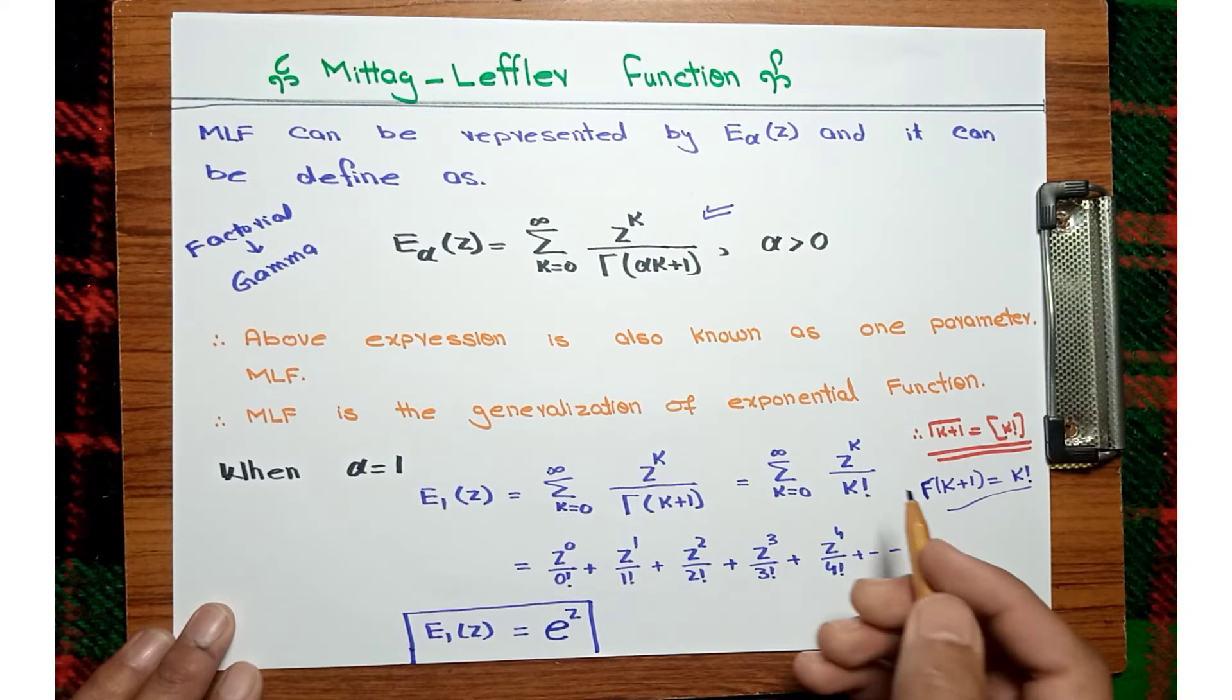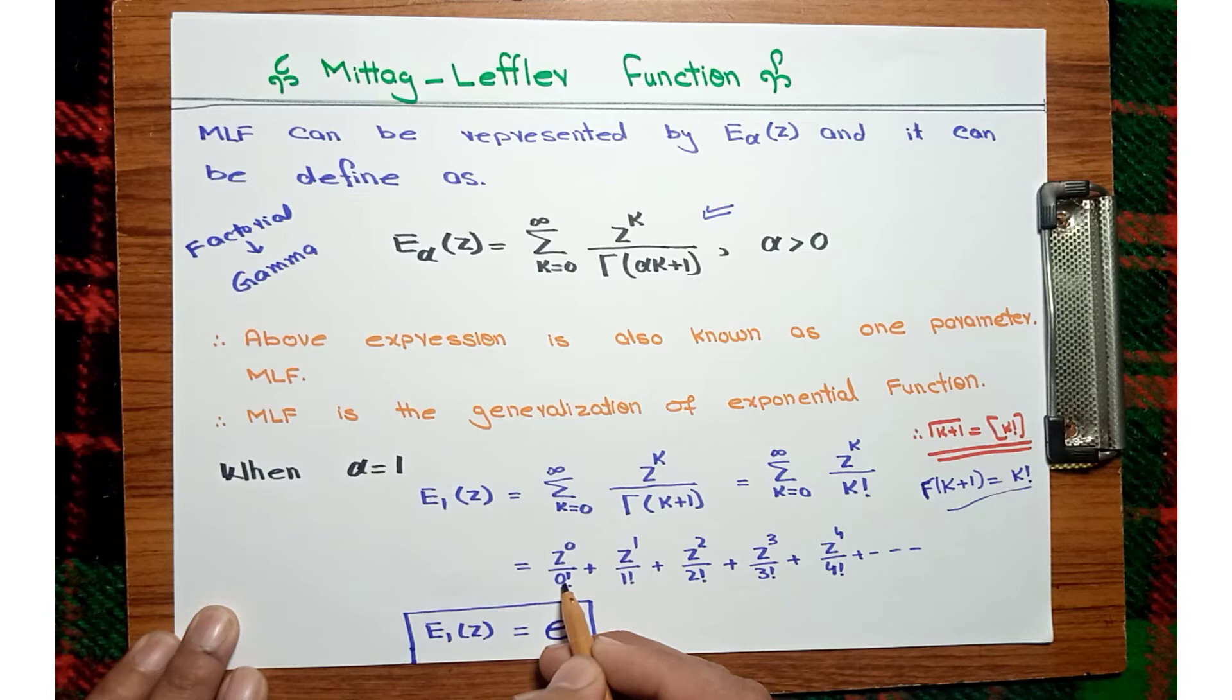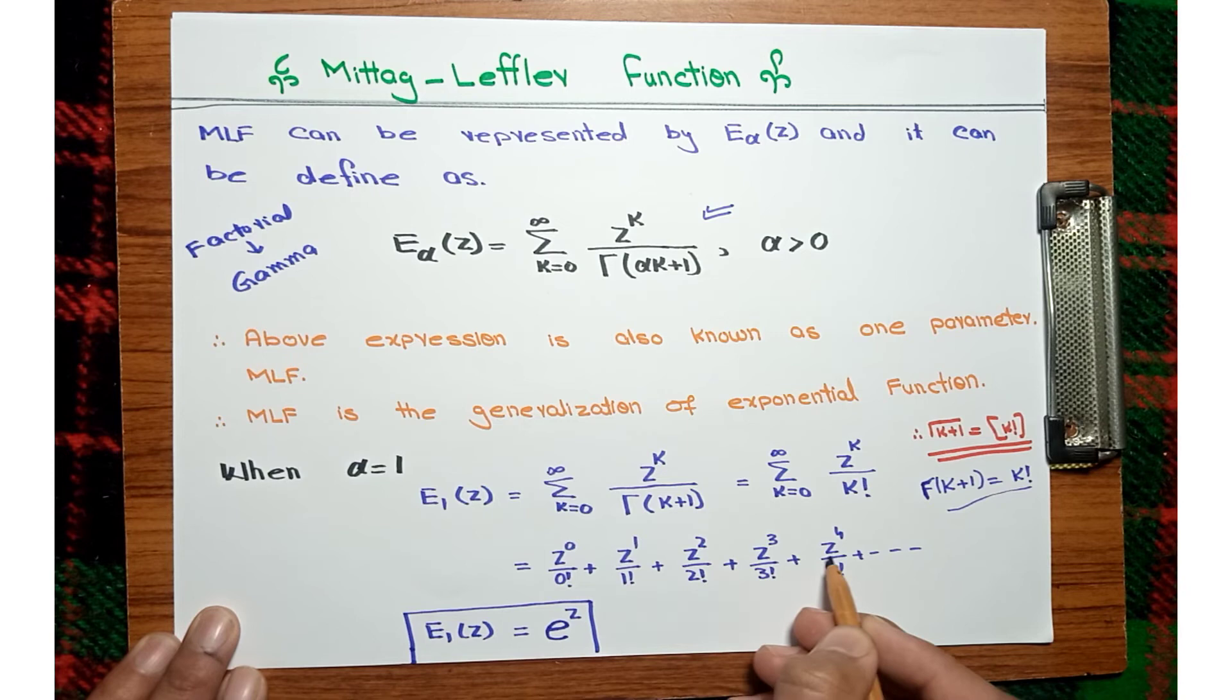If you expand this, you can see z to the 0 divided by 0 factorial, plus z to the 1 over 1 factorial, plus z to the 2 over 2 factorial, plus z to the 3 over 3 factorial, and so on.